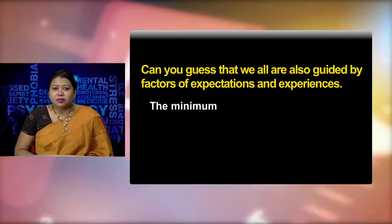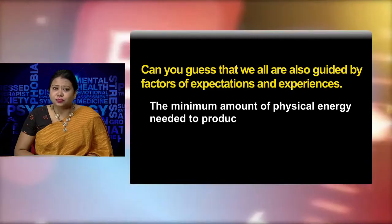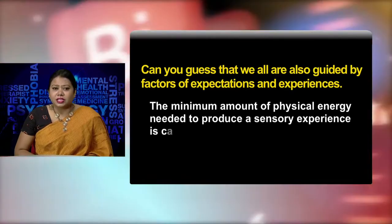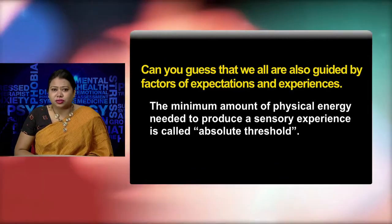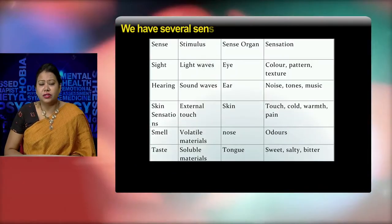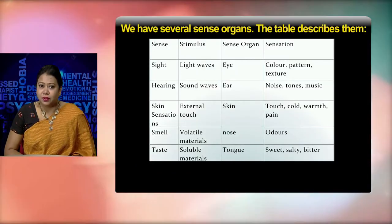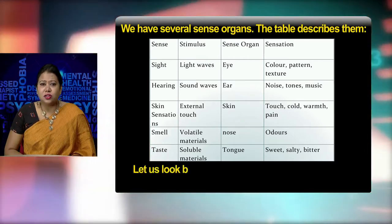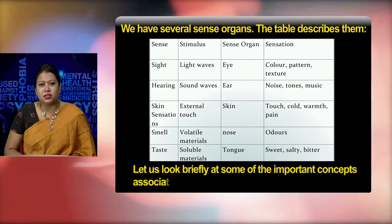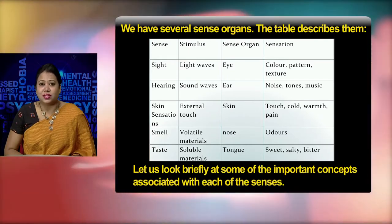The minimum amount of physical energy needed to produce a sensory experience is called absolute threshold. We have several sense organs, and the table describes them. Now let us look briefly at some of the important concepts associated with each of the senses.